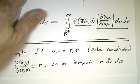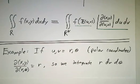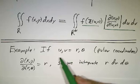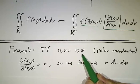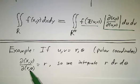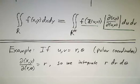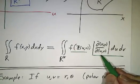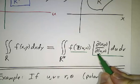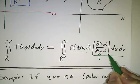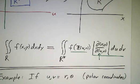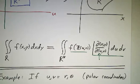We've already seen an example of this. When we use polar coordinates, we call the new coordinates r and theta instead of u and v. The Jacobian of (x, y) with respect to (r, theta) is r. That's why when we integrate in polar coordinates, we don't integrate dr dθ — we integrate r dr dθ. One last thing: what appears in the formula is not the Jacobian itself but the absolute value of the Jacobian, since the Jacobian can be negative and areas must be positive. Next time, we'll do some examples using this formalism.